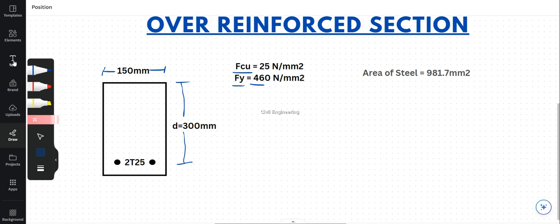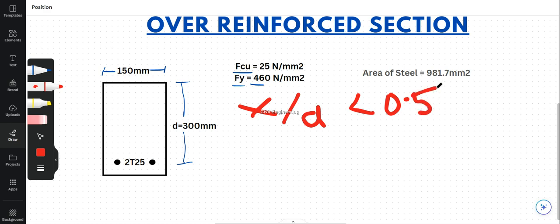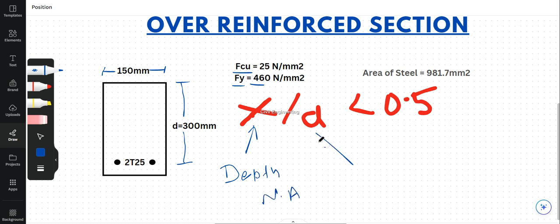To identify an over-reinforced section according to BS 8110 Part 1: if the reinforcement is at the yield state, the x/d ratio must be below or equal to 0.5. Here x is the depth of the neutral axis and d is the effective depth.